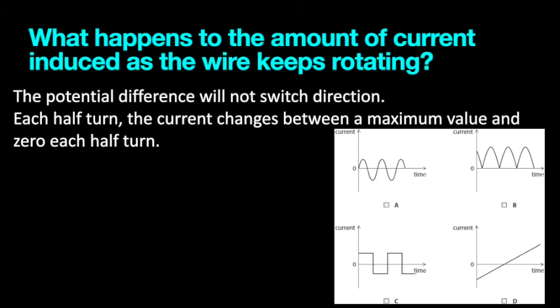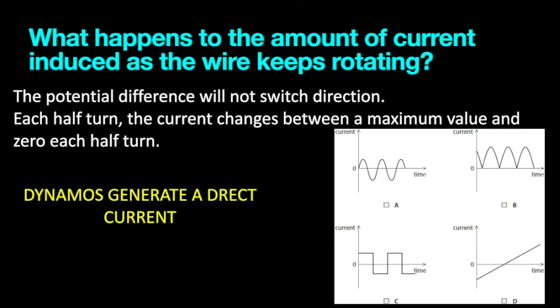As you know, dynamos only induce current in one direction. Therefore, diagram B is our answer. Because current is only induced in the positive direction and doesn't flow in the negative direction, unlike the other diagrams.